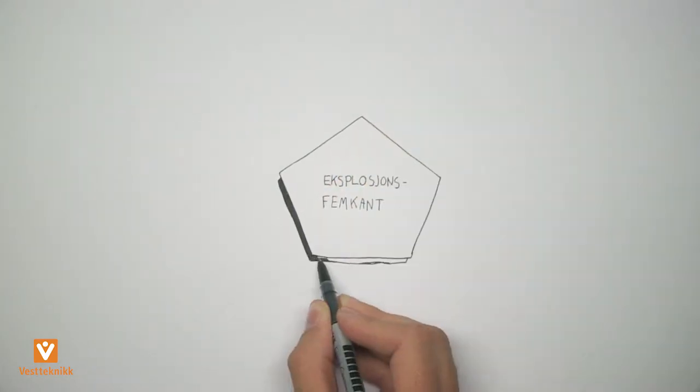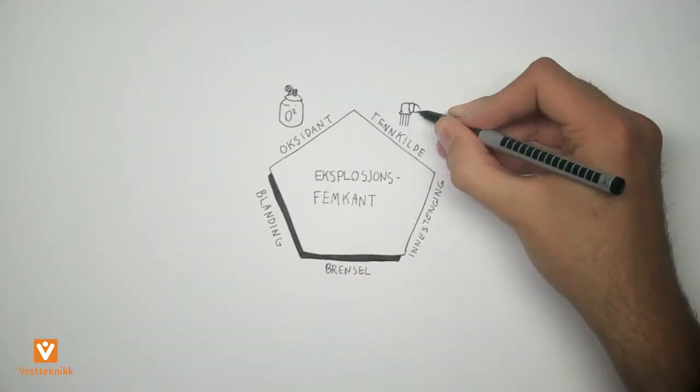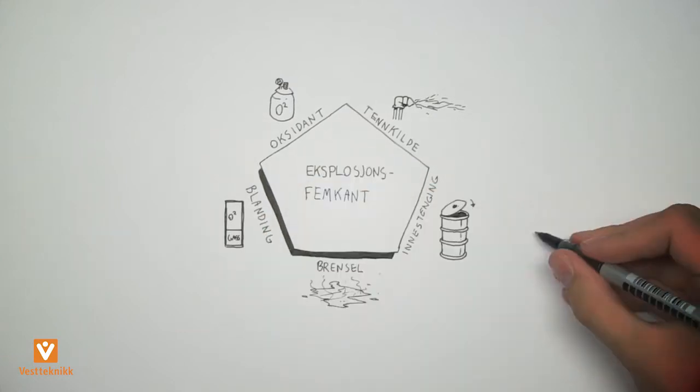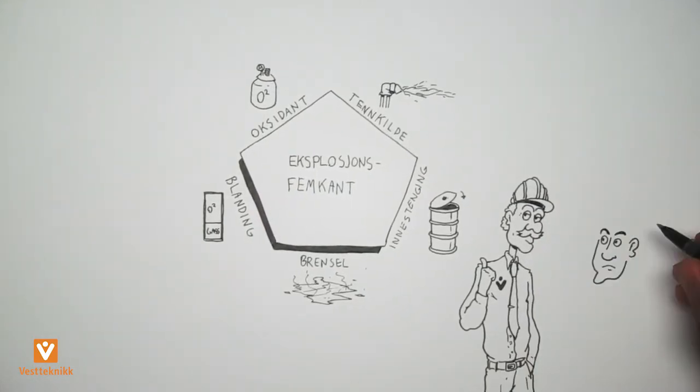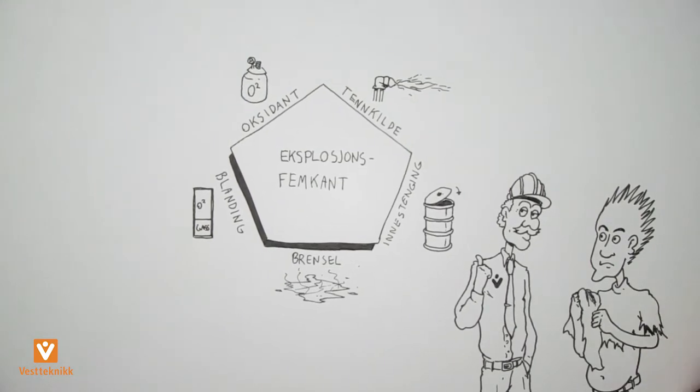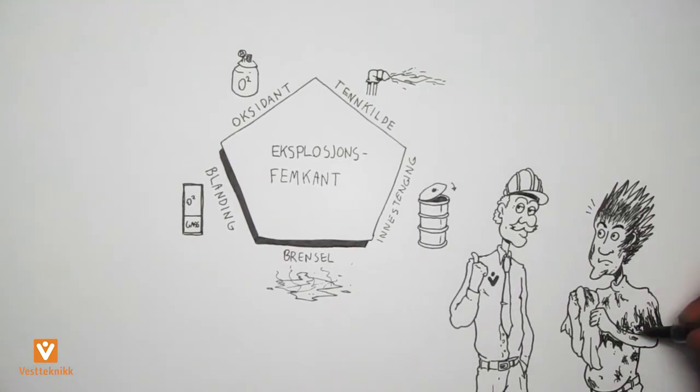Being aware of which elements help to create an explosion can be of great help in preventing one. The explosion pentagon describes the factors that must be present to create an explosion. If you manage to eliminate one of the elements, you remove the risk of explosion.